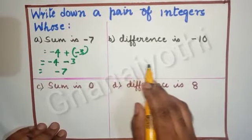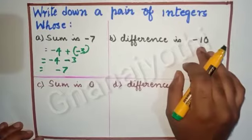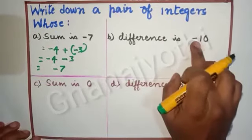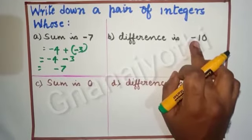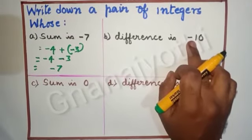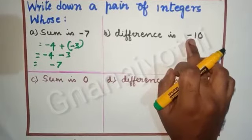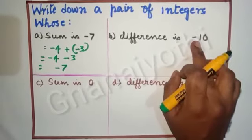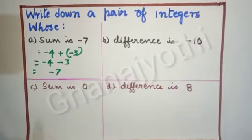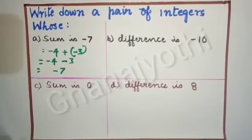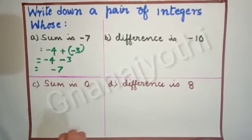Now let us see: the difference is minus 10. We have to get minus 10. The greater number should be with the minus signature. You can take, for example, 20 minus 10 gives 10, 30 minus 10 gives 10, 25 minus 15 gives 10 — such type of numbers. But observe the signature. Here I am going to take 25 and 15.